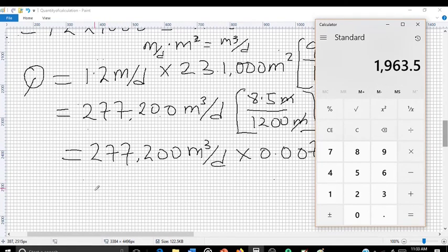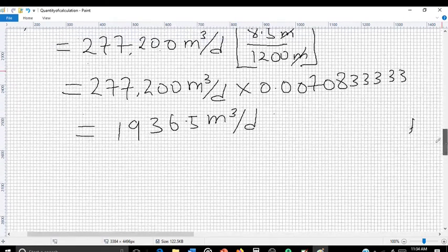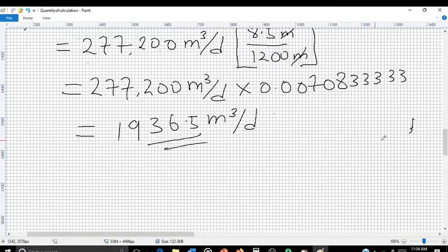So our final answer is 1,936.5 m³ per day. This is our final answer.